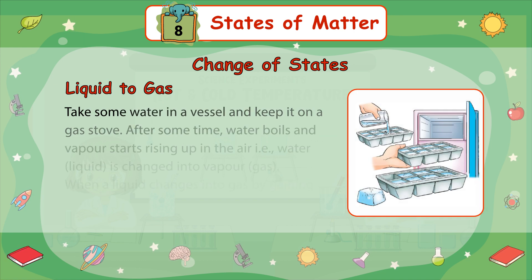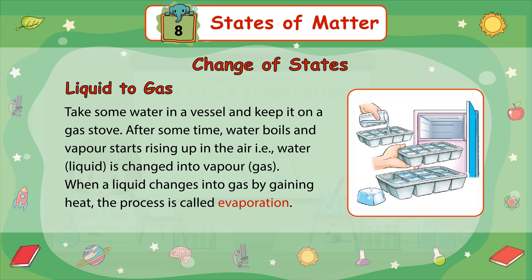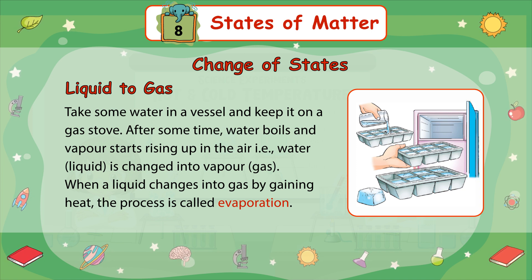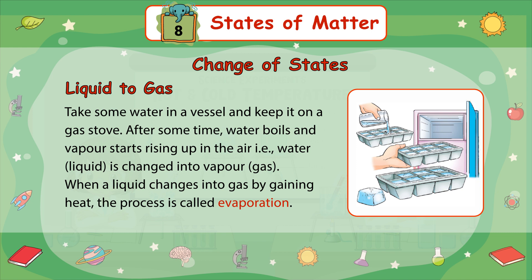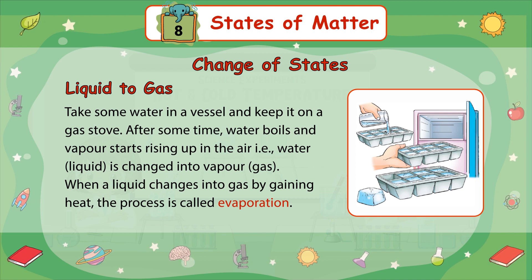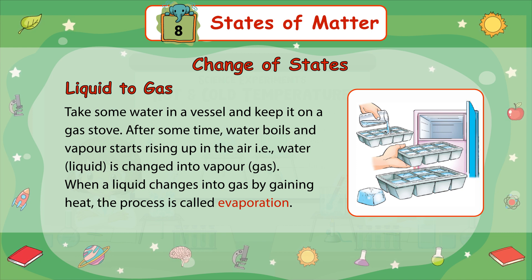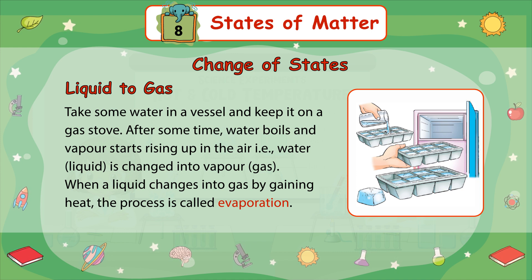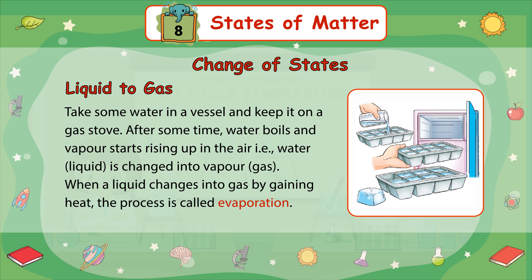Liquid to Gas: Take some water in a vessel and keep it on a gas stove. After some time, water boils and vapor starts rising up in the air — that is, water (liquid) is changed into vapor (gas). When a liquid changes into gas by gaining heat, the process is called evaporation.